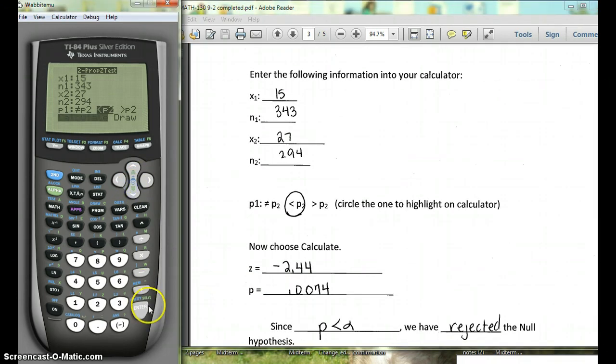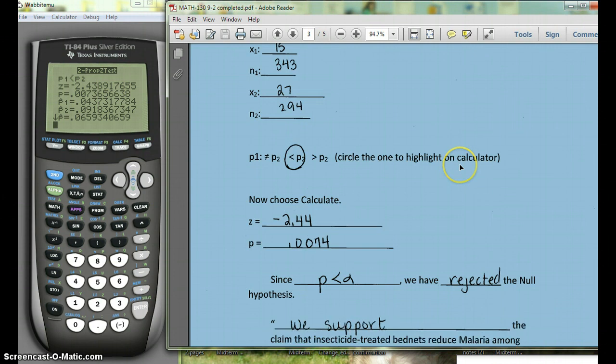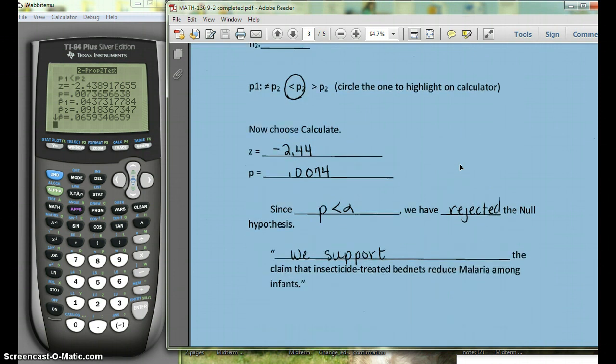Okay, and then we hit calculate. And what we really need is our p-value, which is this kind of third line, 0.0074 if we round to four decimal places. So remember our alpha was 0.01. So 0.0074 is less than 0.01, so we reject the null hypothesis.